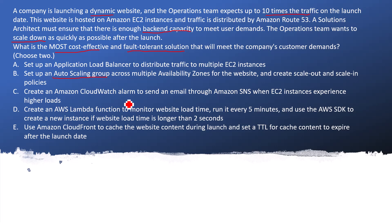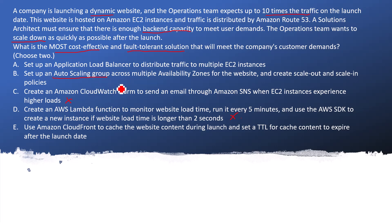Option C: Create an Amazon CloudWatch alarm to send an email through Amazon SNS — this is a very long process and the wrong option. You don't need to involve more steps in such a lengthy option. Option D: Create an AWS Lambda function to monitor the website load during every file — this is a kind of manual intervention where you are writing your own script, and this is not the right approach because everything is already provided by Amazon Auto Scaling Group policies.